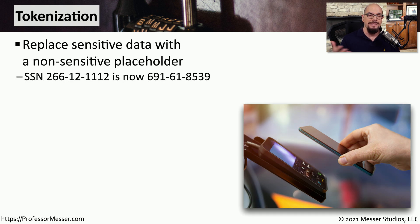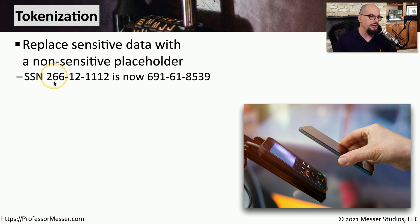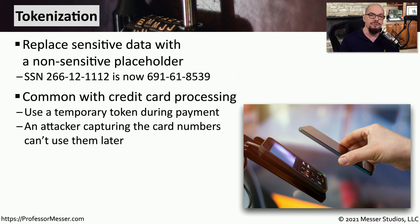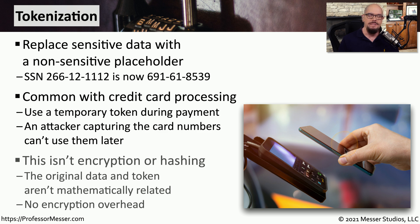Another way to protect data is to show a completely different kind of data than what was originally there — we call this tokenization. It's when we take sensitive data and replace it with a completely different set of data. For example, a social security number like 266-12-1112 would be stored in the database as a completely different number. If someone gains access to this and tries to use it as a social security number, they'll find very quickly that it's not valid. This is commonly used with credit card transactions — when paying with your phone or watch, tokenization transmits a token of your credit card information, not the actual credit card number. This is not hashing or encryption; there is no additional computational overhead.